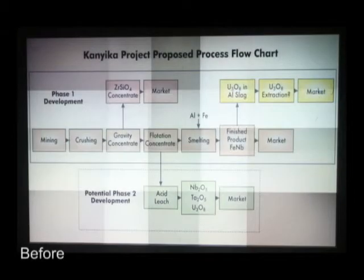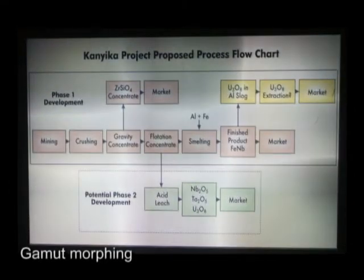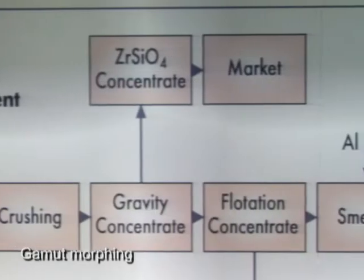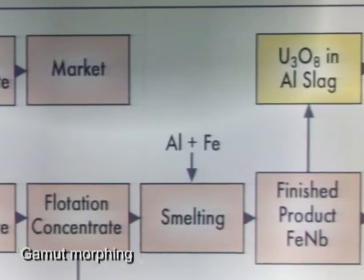Our gamut morphing method consists of three steps. First, we morph the two-dimensional chrominance gamut of one projector to that of another over an overlap region. This is achieved by precisely controlling the individual brightness contributions from each projector, assuring that the chrominance gamut is morphed in a smooth and constrained manner across the overlap regions. Although the chrominance gamut now morphs smoothly across the display, we can still see fast changes in brightness.